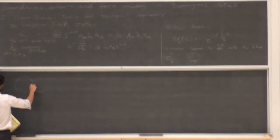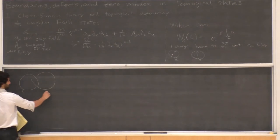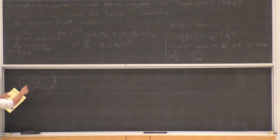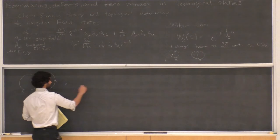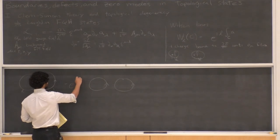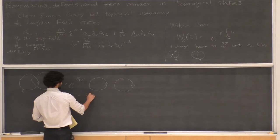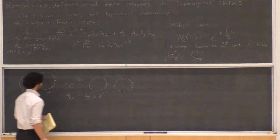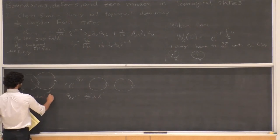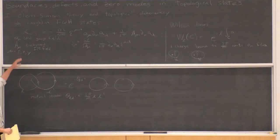In this theory you can compute the mutual statistics of quasiparticles. If you take quasiparticles with charges L and L' going around each other in a loop and compare to the process where they don't intersect, there's a phase of 2π/M times L×L'. This is the mutual statistics, and it's something you can compute by taking the Wilson lines associated with the two curves and comparing their expectation values.